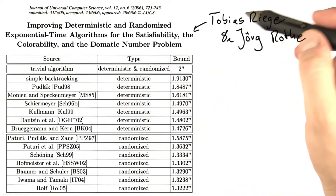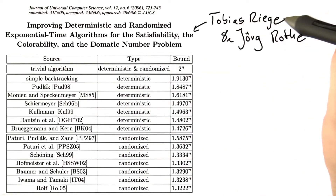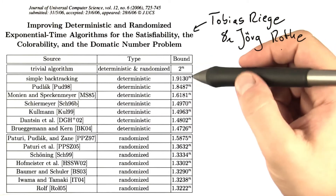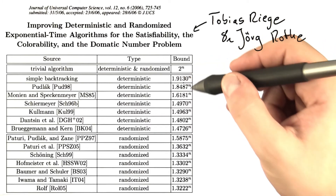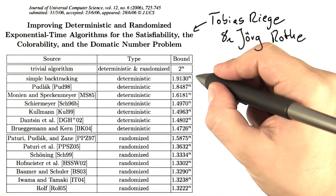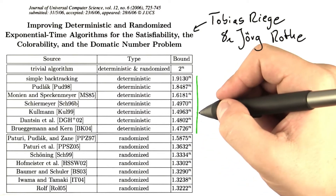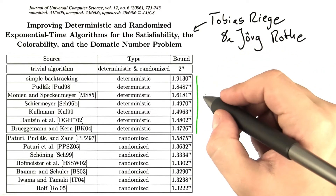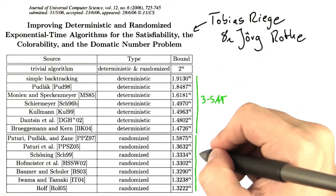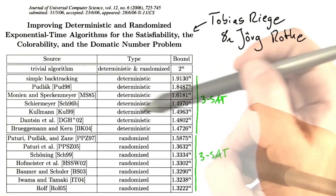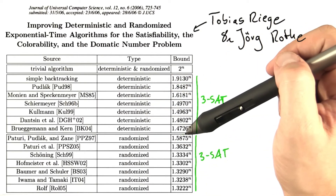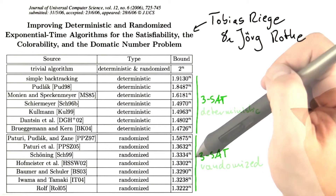This table here is taken from a survey by Tobias Riege and Jörg Rote, and it shows the development of better and better algorithms for 3SAT. Up here you can see the deterministic algorithms for 3SAT, and down here you can see randomized algorithms for 3SAT. You can see how over the years the algorithms got better and better, and the same thing over here.